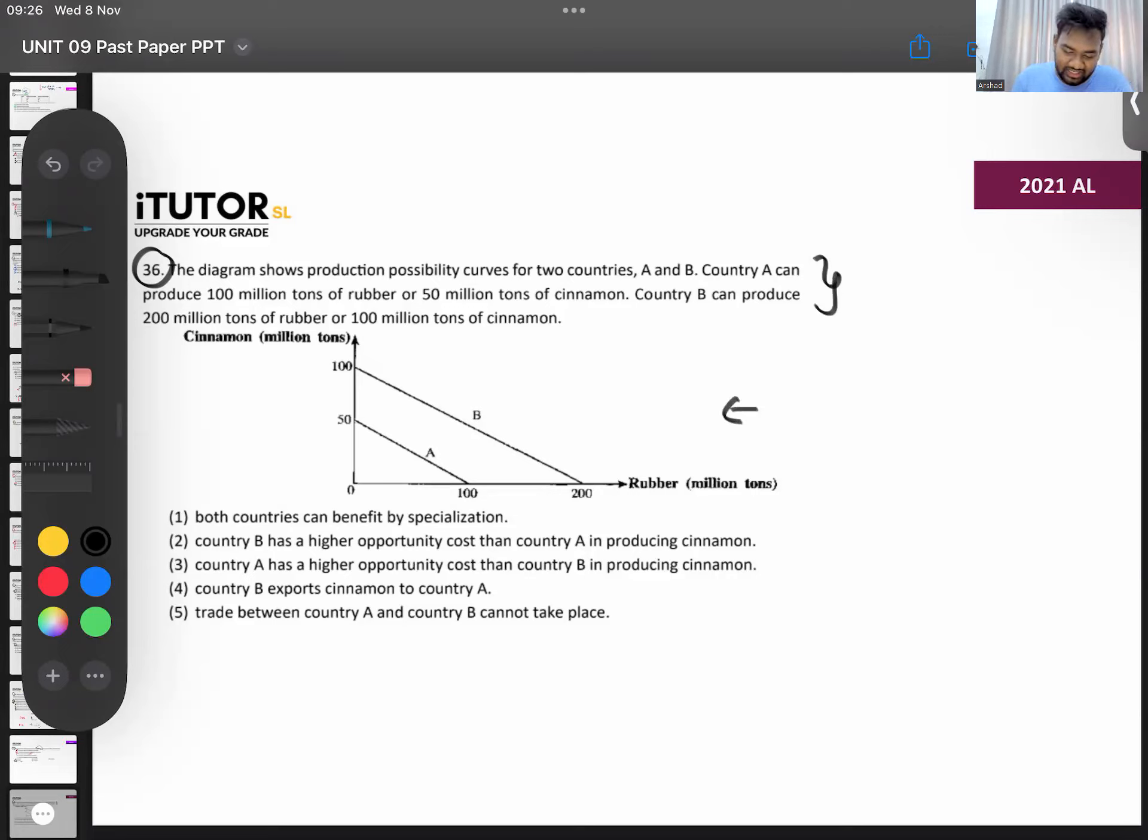They've given both - both are not needed. Both countries can benefit by specialization. We'll see what we have to find. Looking at the PPC, tell me absolute advantage - who has it? Who can produce more cinnamon? Who can produce more rubber? Both cinnamon and rubber - you can say Country B. They have a bigger PPC overall. Country B's PPC is much bigger than Country A, so both cinnamon and rubber will be Country B.